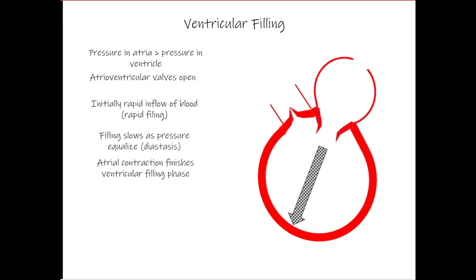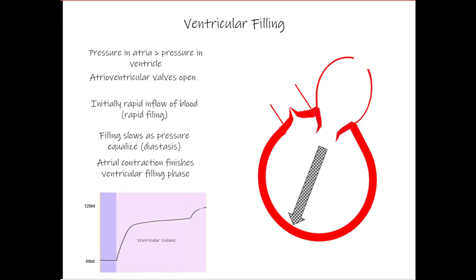Toward the end of ventricular filling, recalling the electrical activity of the heart, the P wave causes atrial contraction. So toward the end of ventricular filling, the atria will contract and push a little more blood into the ventricle. The graph at the bottom depicts ventricular volume: the lighter purple indicates rapid ventricular filling, followed by diastasis, followed by a small bump in volume caused by atrial contraction.